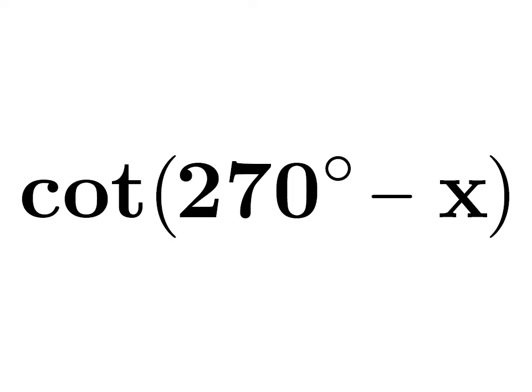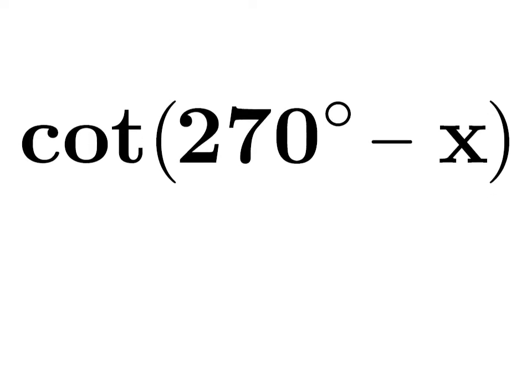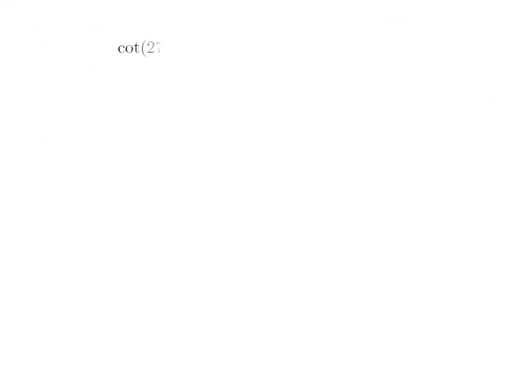In this video we will learn to find the value of cot of 270 degrees minus x. As we know, cot of theta is equal to cosine of theta divided by sine of theta.